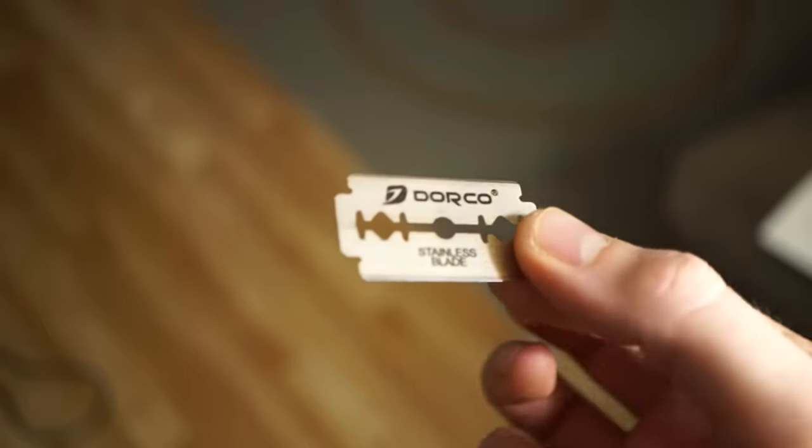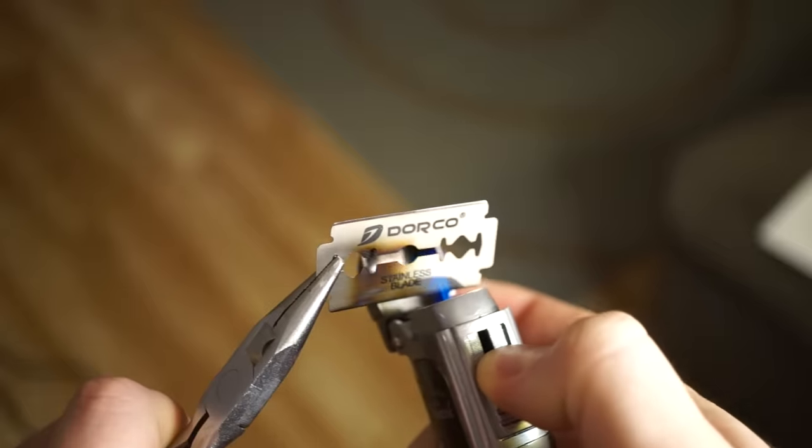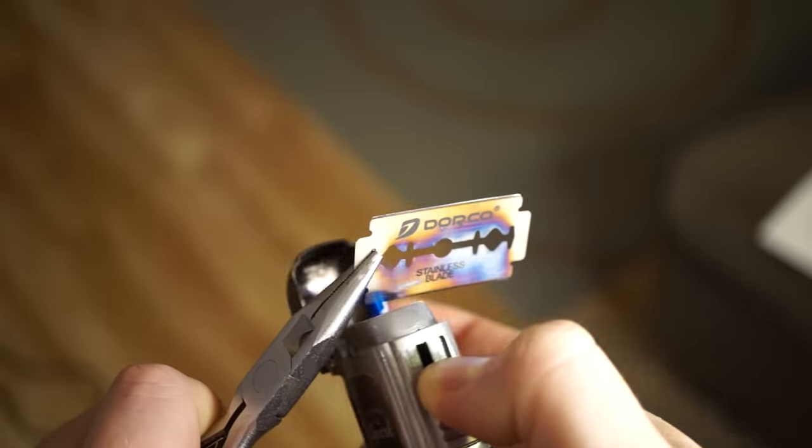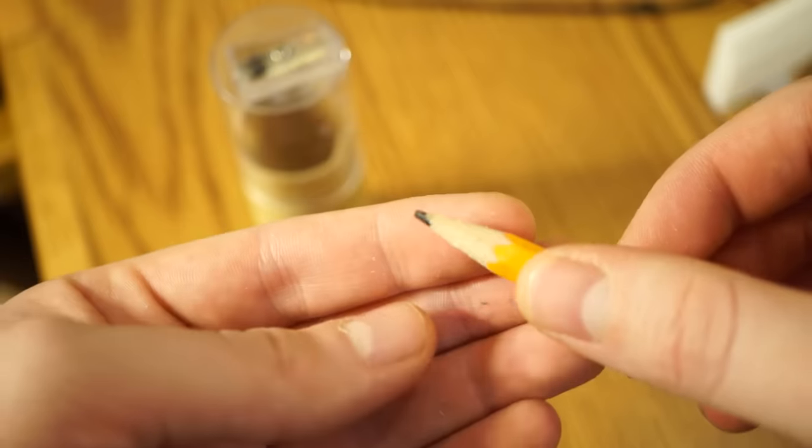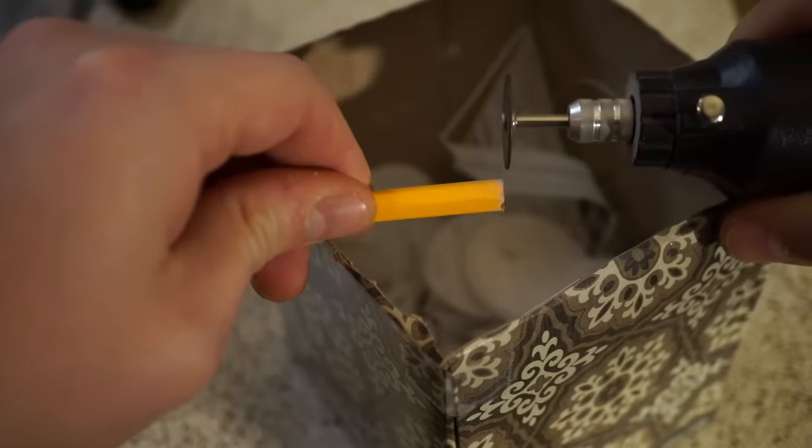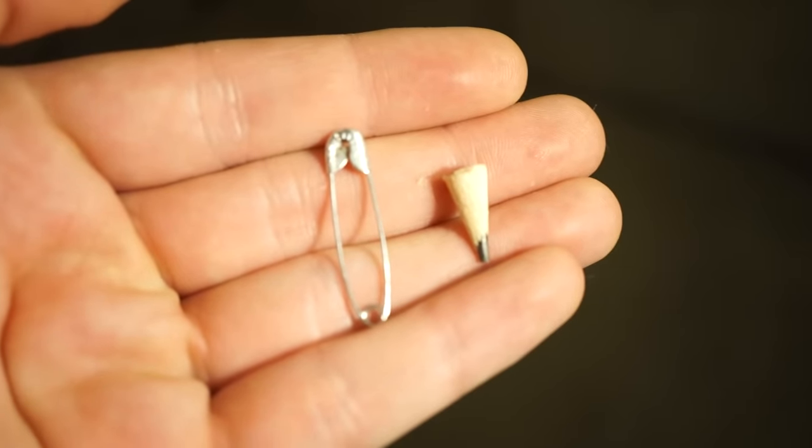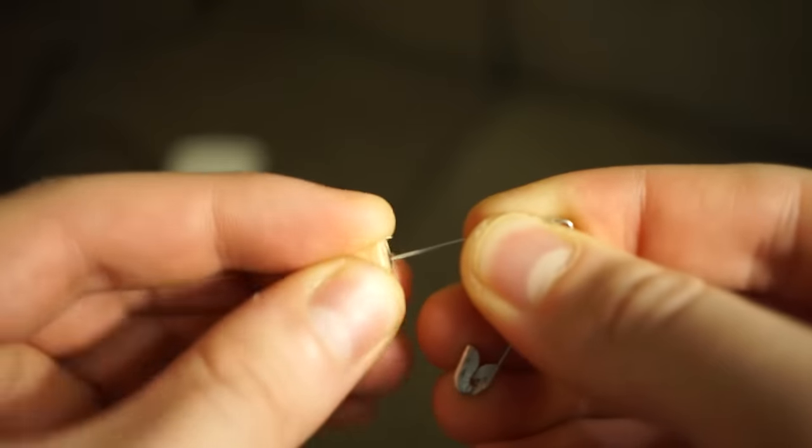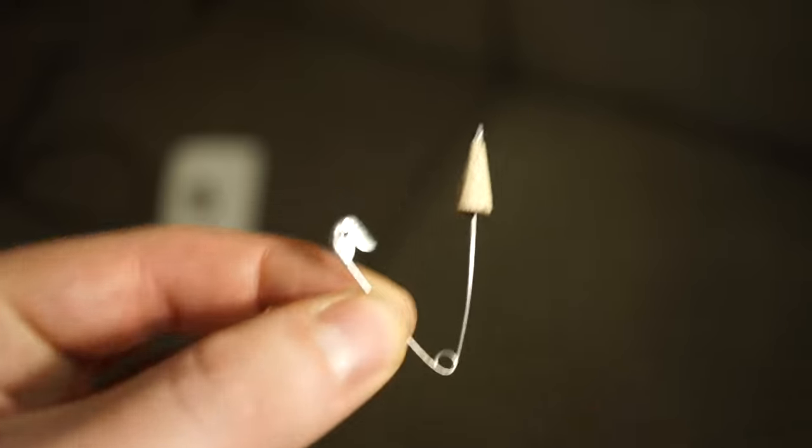We first need to add a layer of oxide to the razor blade by heating it up with a very hot flame until the steel turns blue. Next, we cut a small piece off the sharpened pencil. When we attach the safety pin into the pencil lead, and the lead makes a point contact with the razor blade, current will be forced to flow in only one direction, just like the diode.